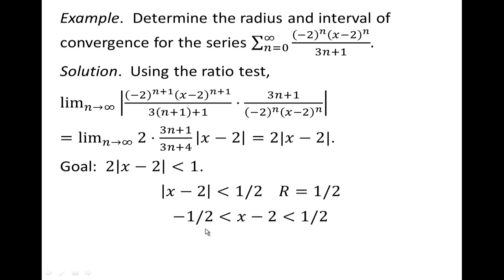Adding 2 to both sides will end up with negative 1 half plus 2, which is 3 halves, and 2 plus 1 half, which is 5 halves. Our center is 2. I can go 1 half more than 2, that's 5 halves, or 1 half less than 2, that's 3 halves.